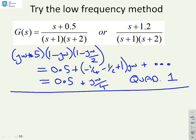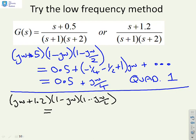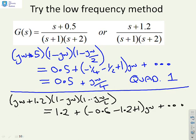What about the second example? You'll see all I've done here is change the 0.5 to 1.2. So I can now write (jω+1.2) into (1-jω)(1-jω/2). If I multiply this out, I'm going to get 1.2, and then plus minus 0.6 minus 1.2 plus 1 into jω, plus again higher order terms which I'm going to ignore. That gives me 1.2 minus 0.8jω, which in this case is in quadrant 4.